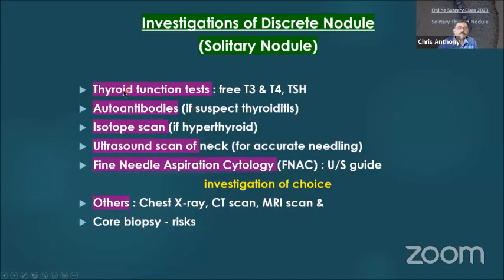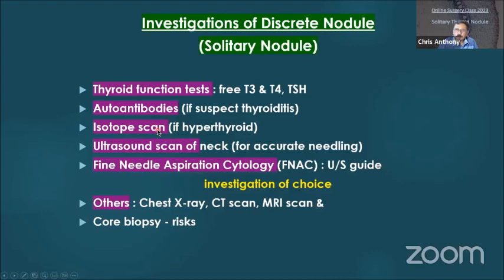Investigations include: thyroid function test (T3, T4, TSH), autoantibodies if you suspect thyroiditis, isotope scan if the patient has hyperthyroid symptoms to see whether the nodule is cold or hot, and ultrasound scan — which is the most important first-line investigation. Ultrasound of the neck is also used for fine needle aspiration cytology (FNAC), which is done under ultrasound guidance. FNAC is the investigation of choice in any patient with a thyroid nodule.